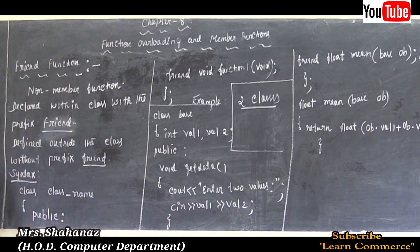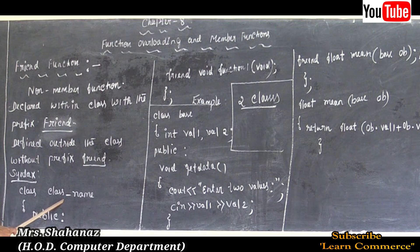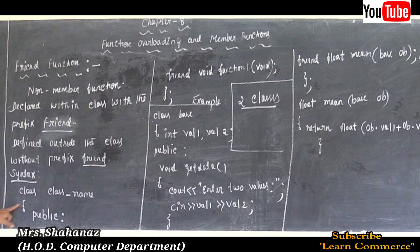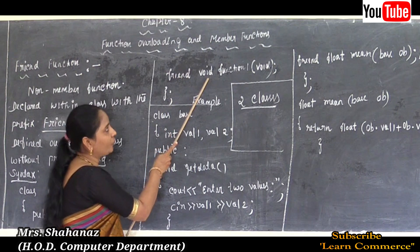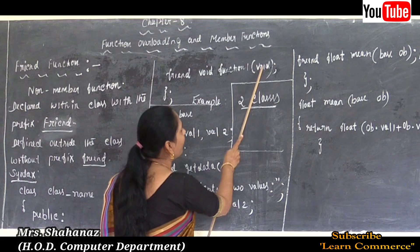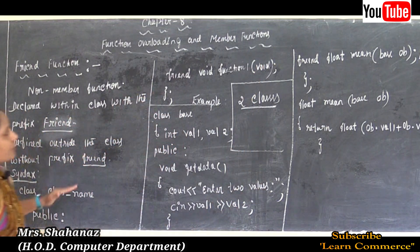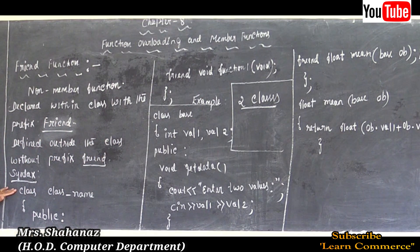The syntax of the friend function: class class_name, opening flower bracket, then under public access specifier, the declaration of the friend function using the prefix 'friend', then closing flower bracket and semicolon. This is the syntax of the friend function.